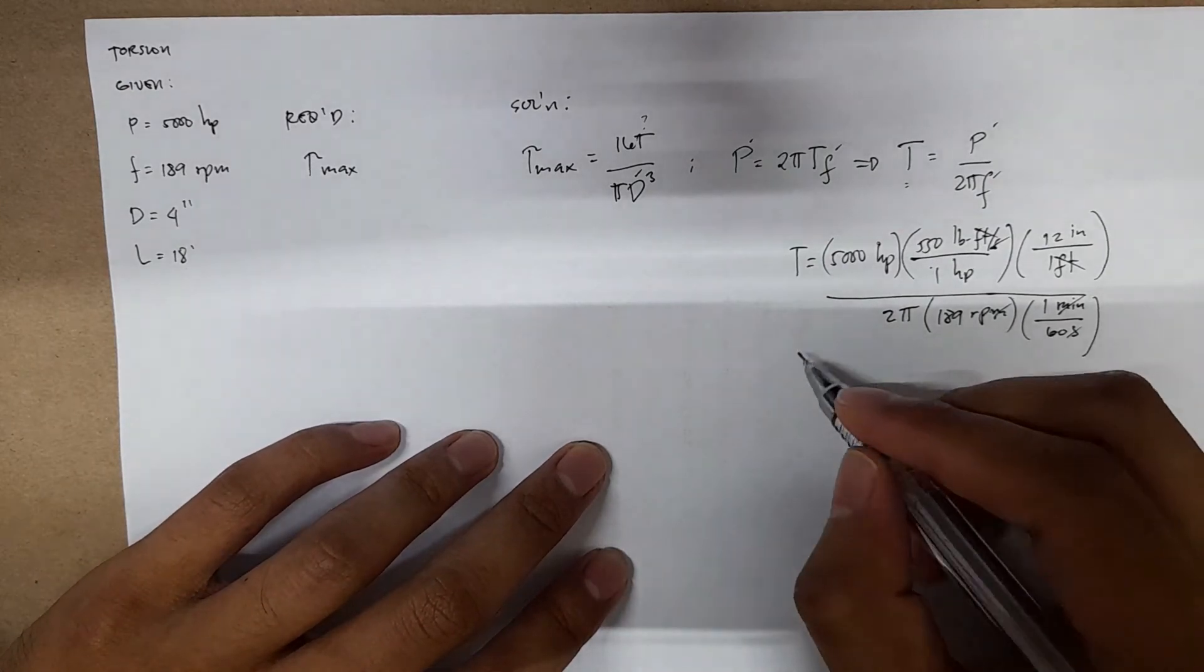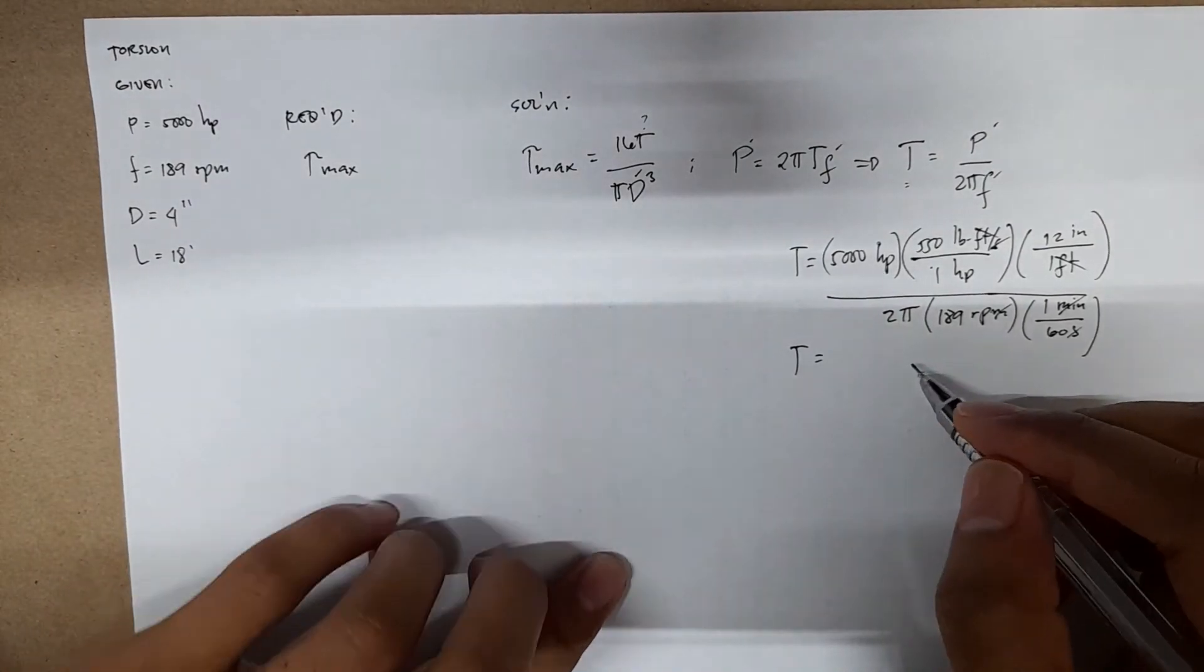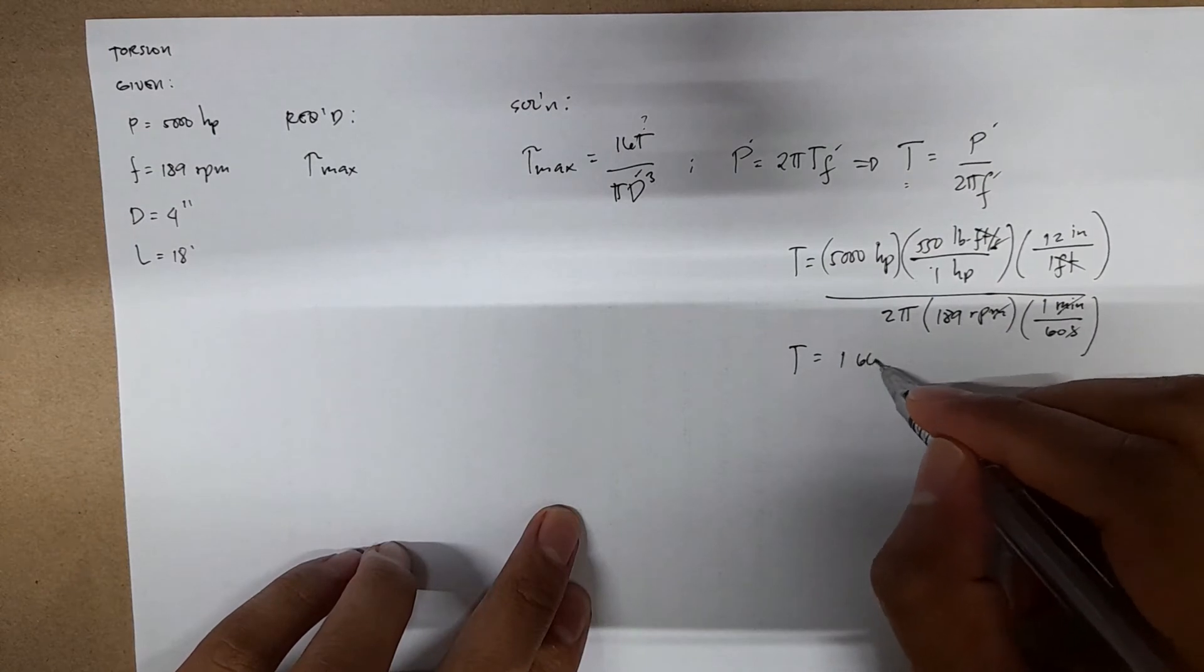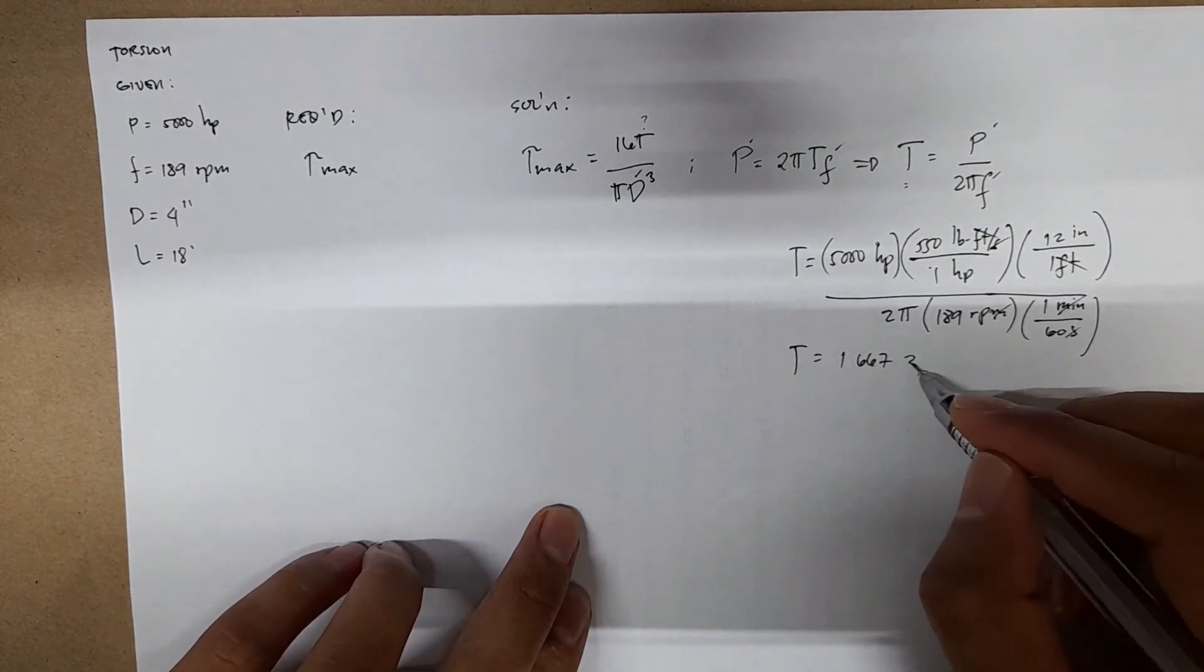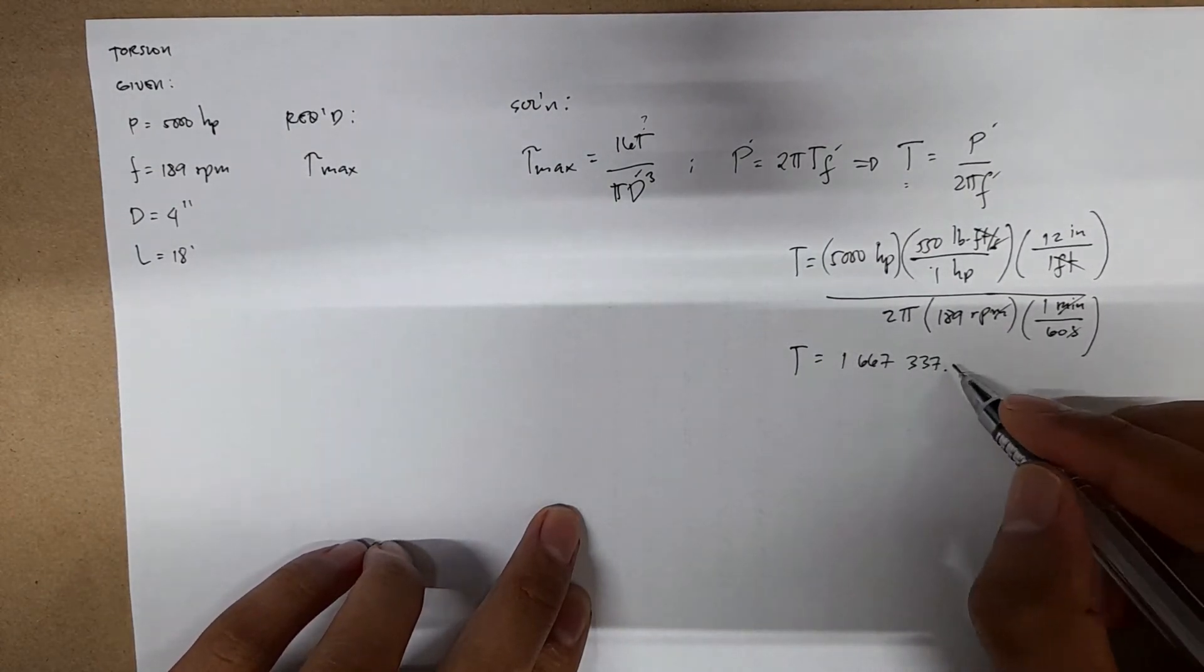T equals 1,667,337.5 pound inch. Now you have your torque.